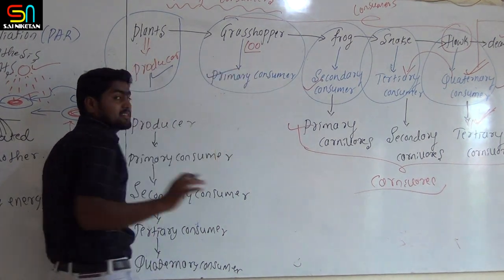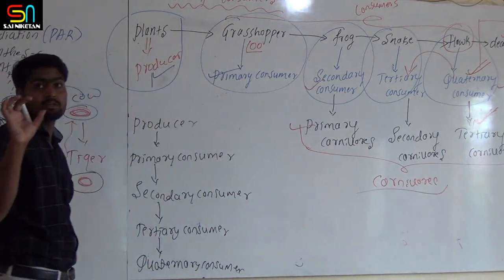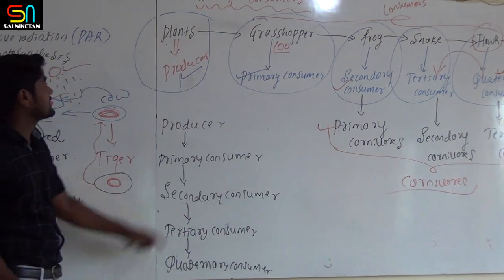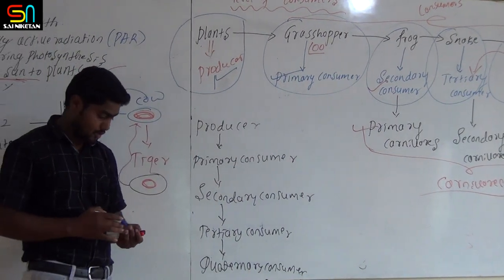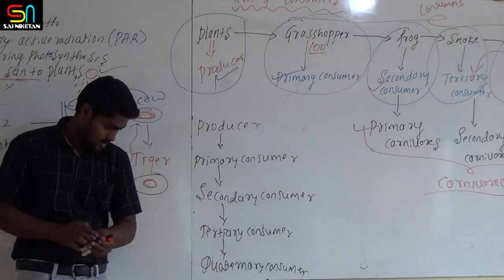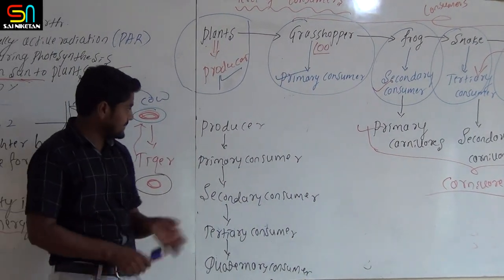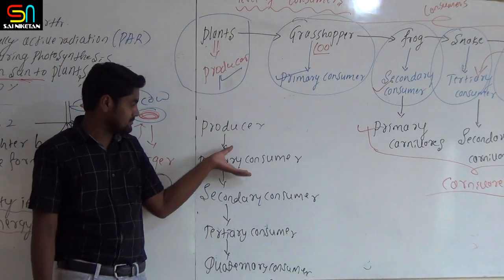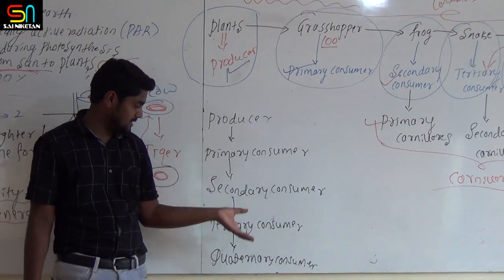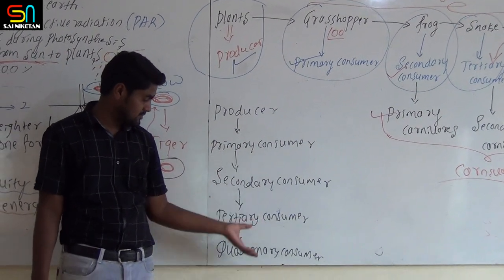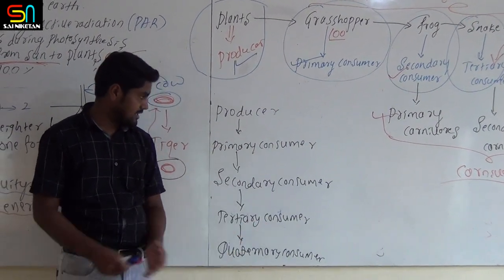Primary consumer, secondary consumer, tertiary consumer, quaternary consumer — each represents a trophic level.